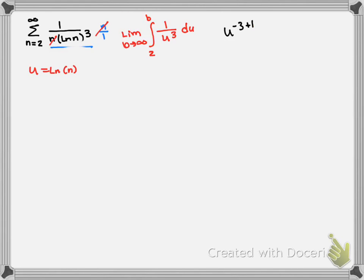We have u to the negative 2 over negative 2 from 2 to b as long as we plug in for u. What goes back in is ln of n.